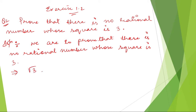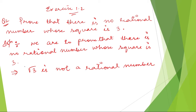This means that root 3 is not a rational number. If you take the square of root 3, it becomes 3, so this is just saying that root 3 is not a rational number. We are going to prove this.